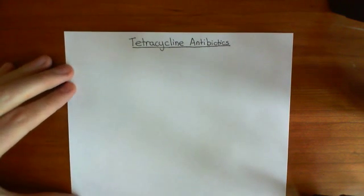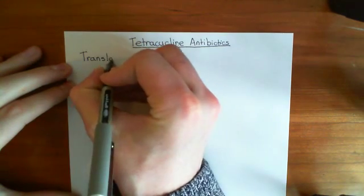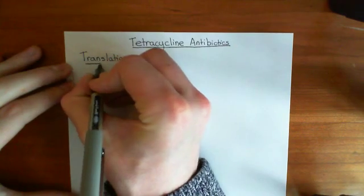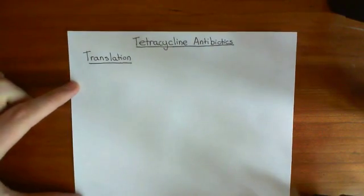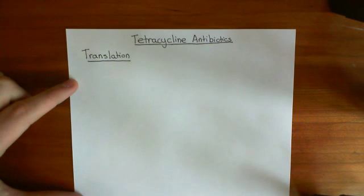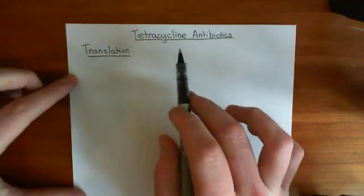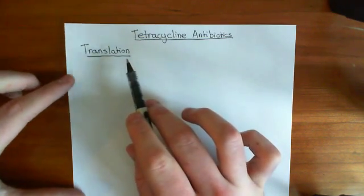Let's begin with the process of translation in bacteria. Translation is undertaken by the ribosomes in bacteria. Very luckily, bacterial ribosomes have a slightly different structure to eukaryotic ribosomes. So we can get antibiotics that specifically target prokaryotic or bacterial ribosomes and don't interfere with eukaryotic ribosomes, because it would be an utter disaster to give someone a drug which is going to interfere with translation in their own cells. These antibiotics are incredibly selective for bacterial translation over eukaryotic translation.